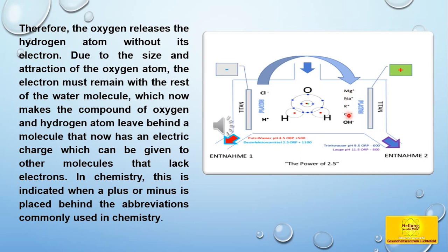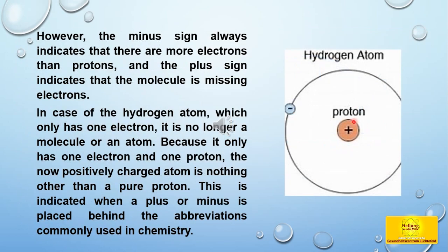In chemistry, this is indicated when a plus or minus is placed behind the abbreviations commonly used in chemistry. The minus sign always indicates that there are more electrons than protons, and the plus sign indicates that the molecule is missing electrons. In the case of the hydrogen atom, which only has one electron, it is no longer a molecule or an atom. Because it only has one electron and one proton, the now positively charged atom is nothing other than a pure proton.